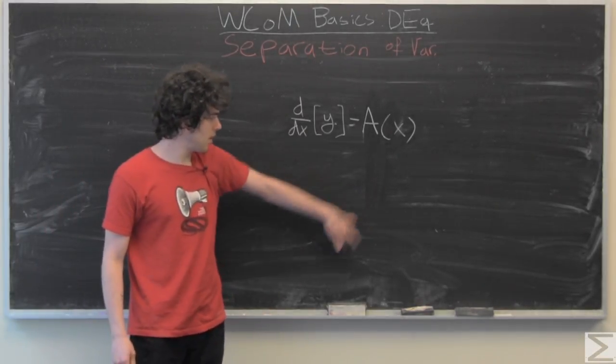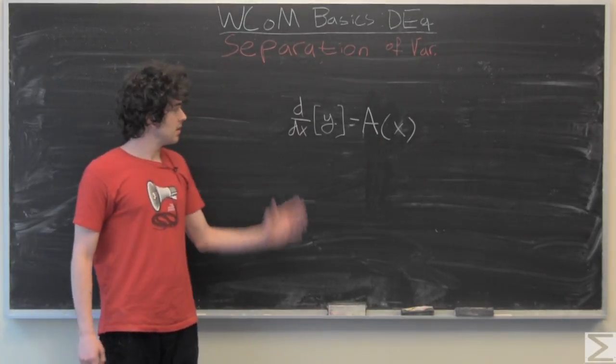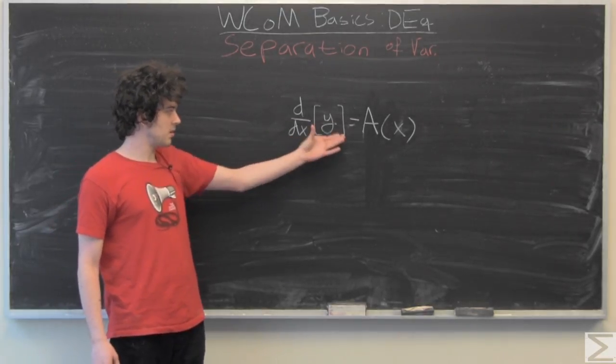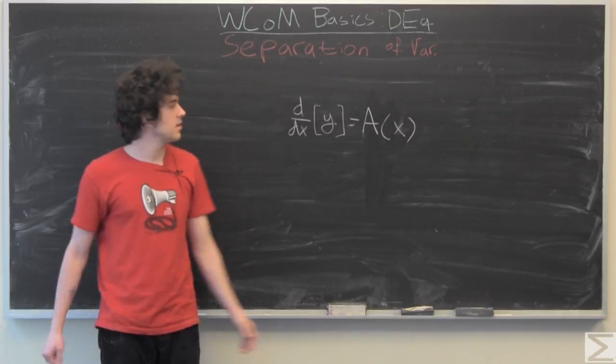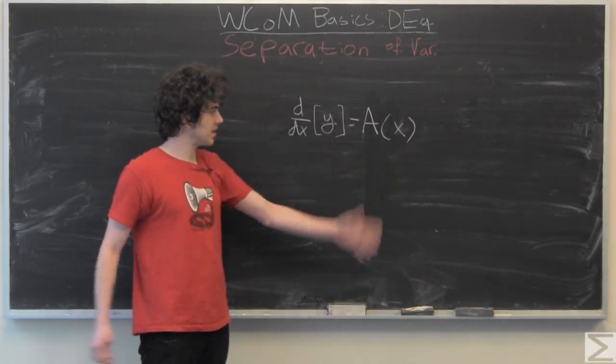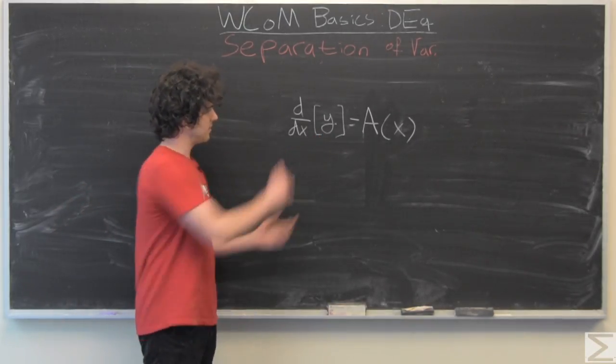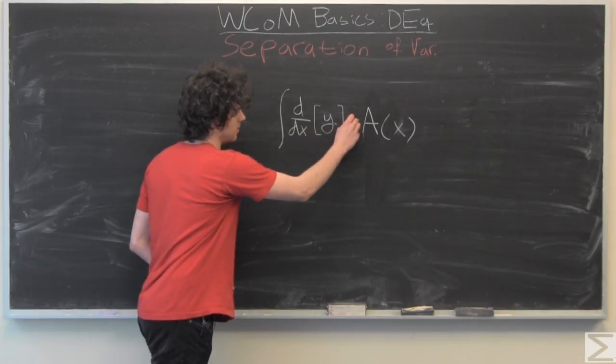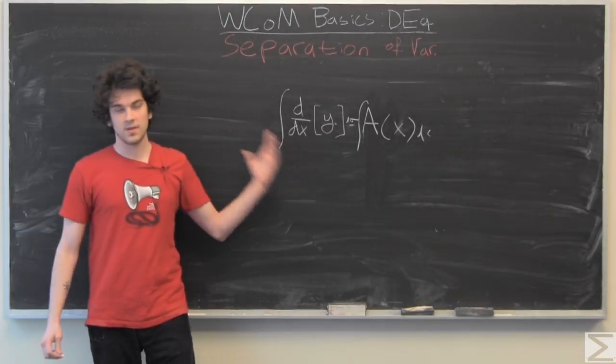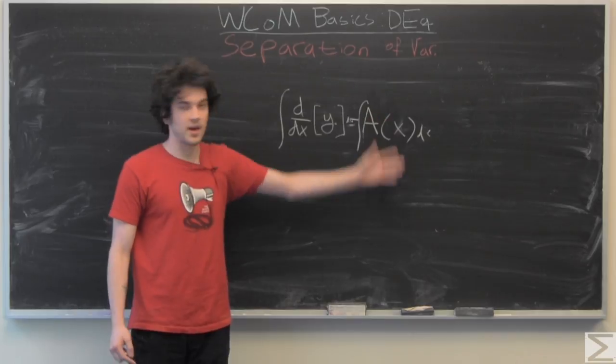In your Calculus 1 and 2 class, you've dealt with functions that have looked like this. The derivative with respect to x on y is equal to some function of x. And in general, you just integrate both sides with respect to x. And you would notice that the derivative and the integral cancel out, and you just get y equals the integral of a.